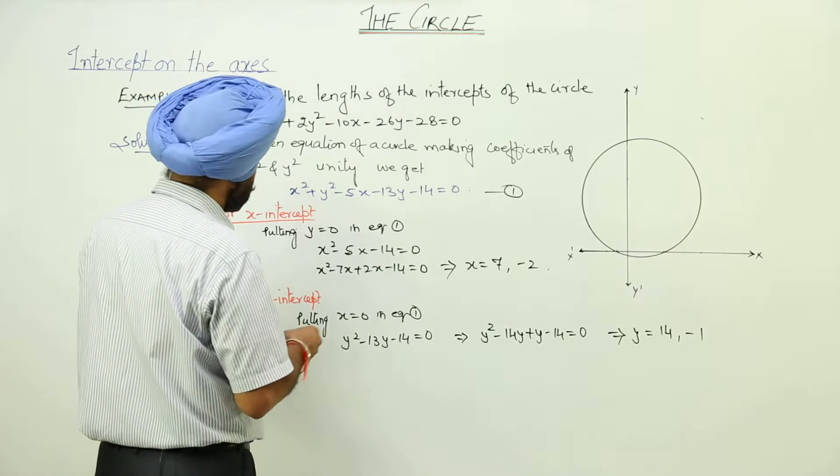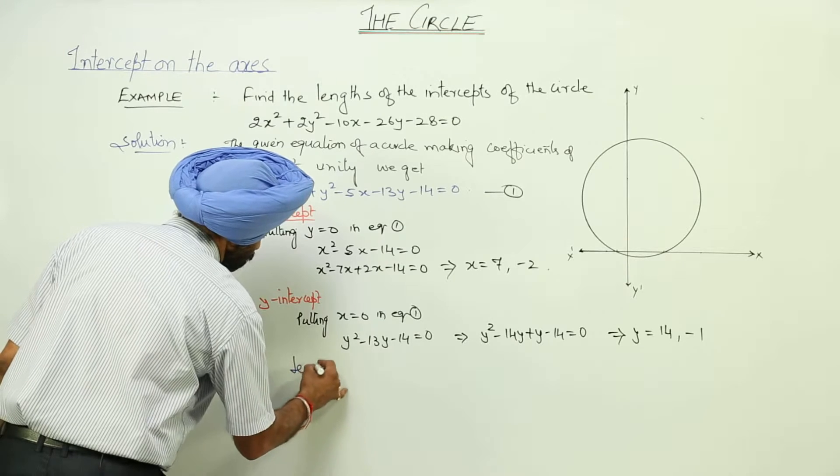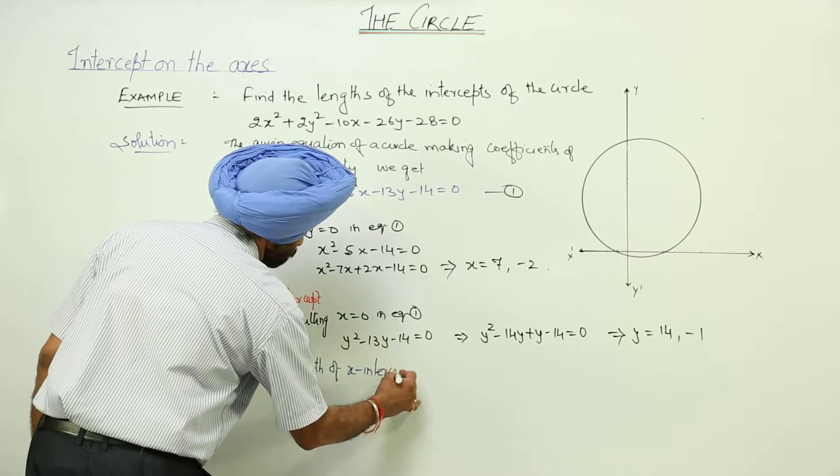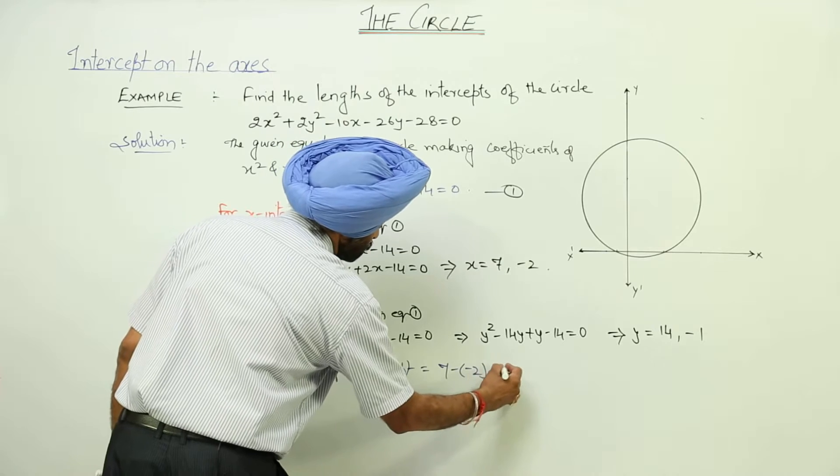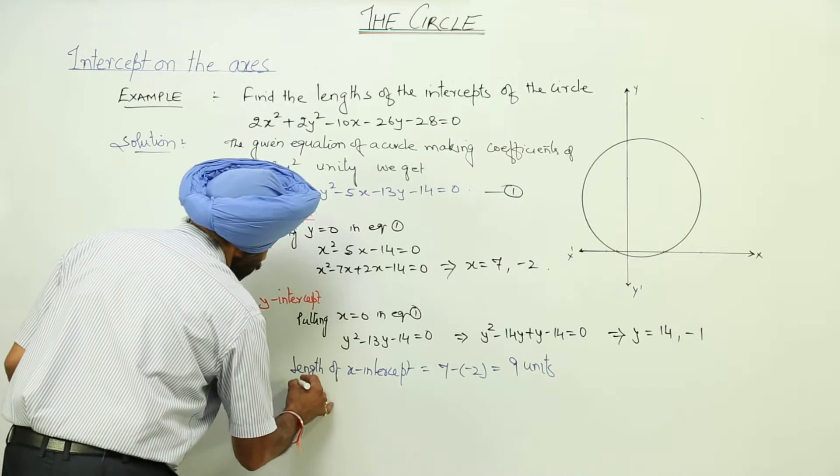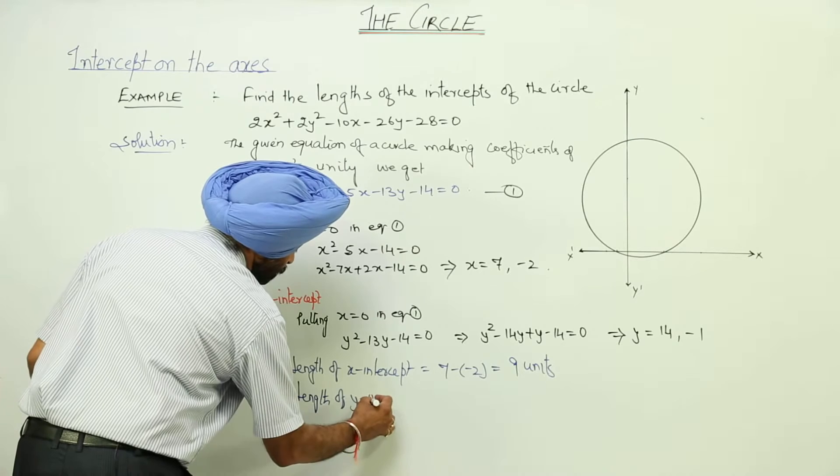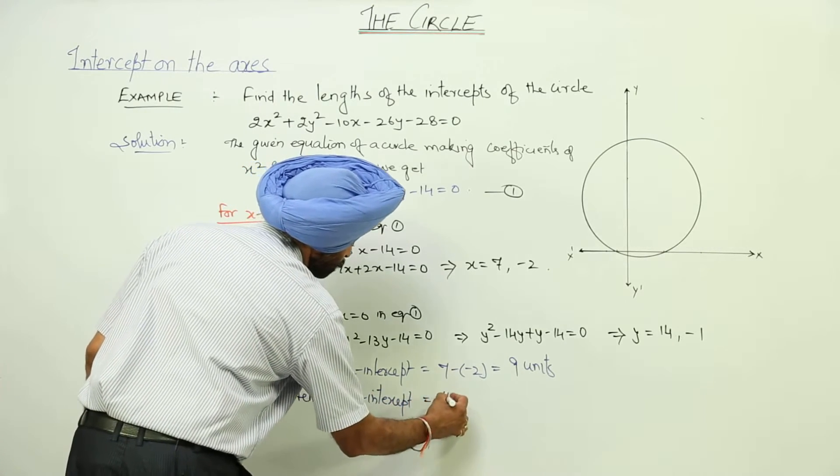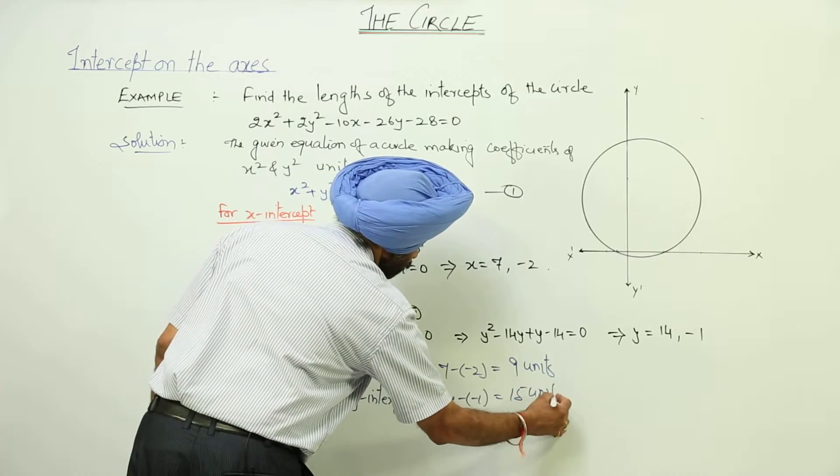Now, what are the intercepts? Length of y intercept is equal to 14 minus minus 1, that is equal to 15 units.